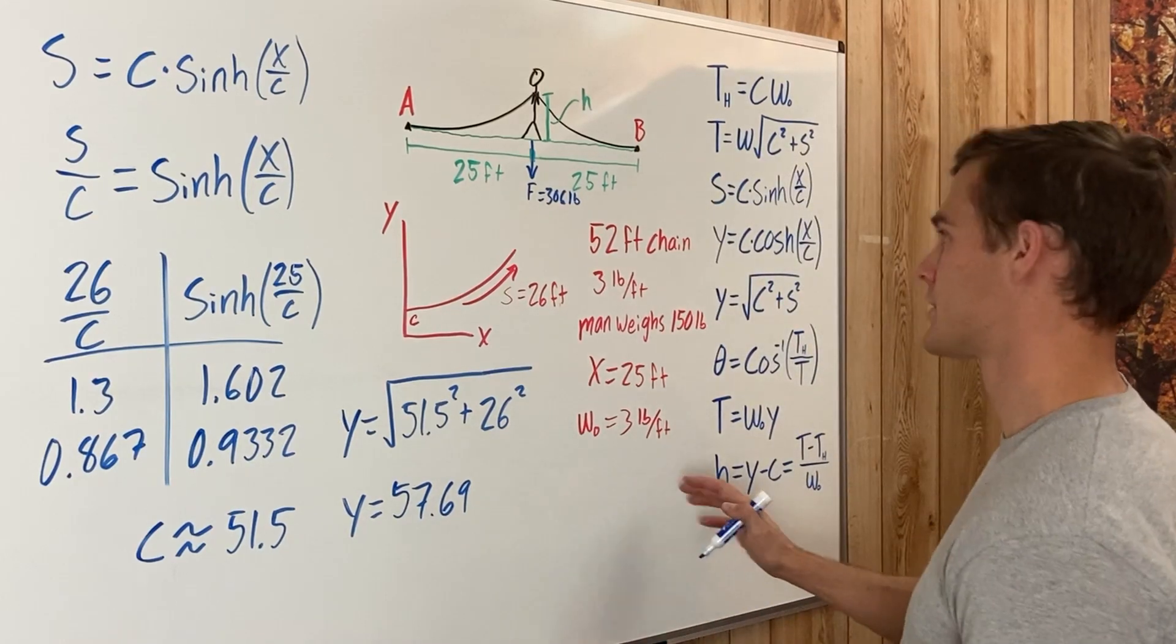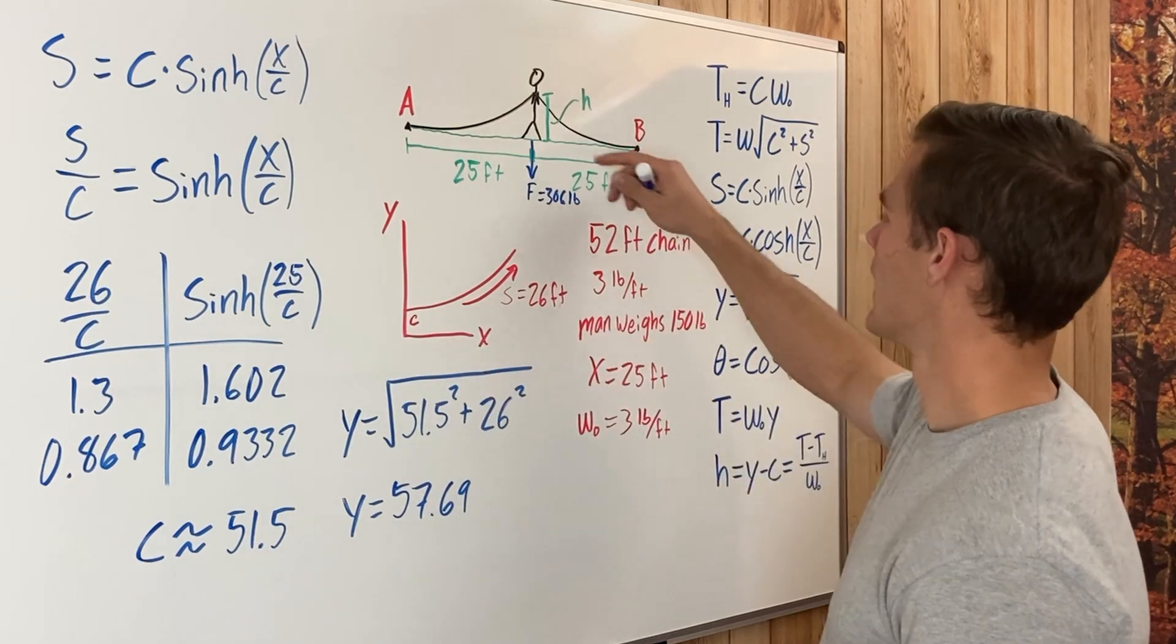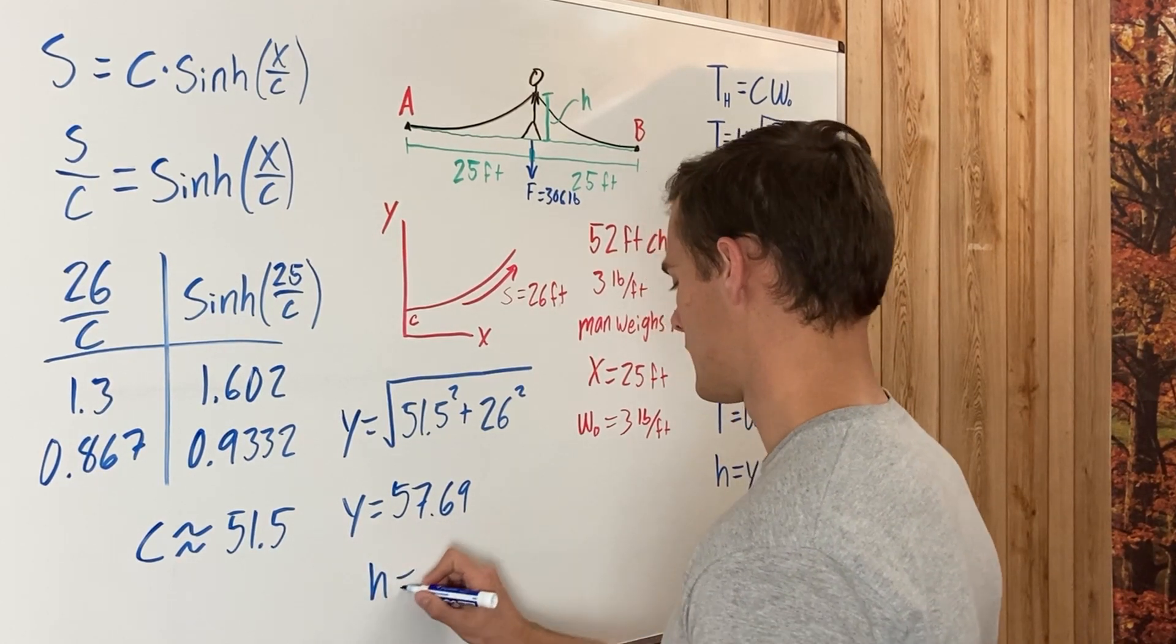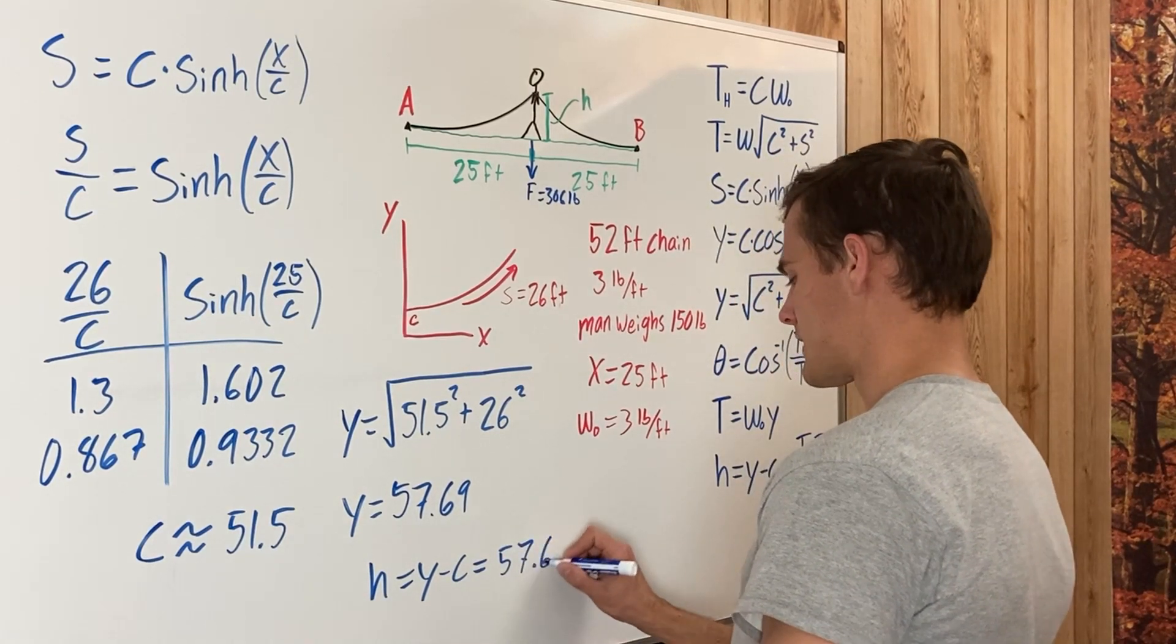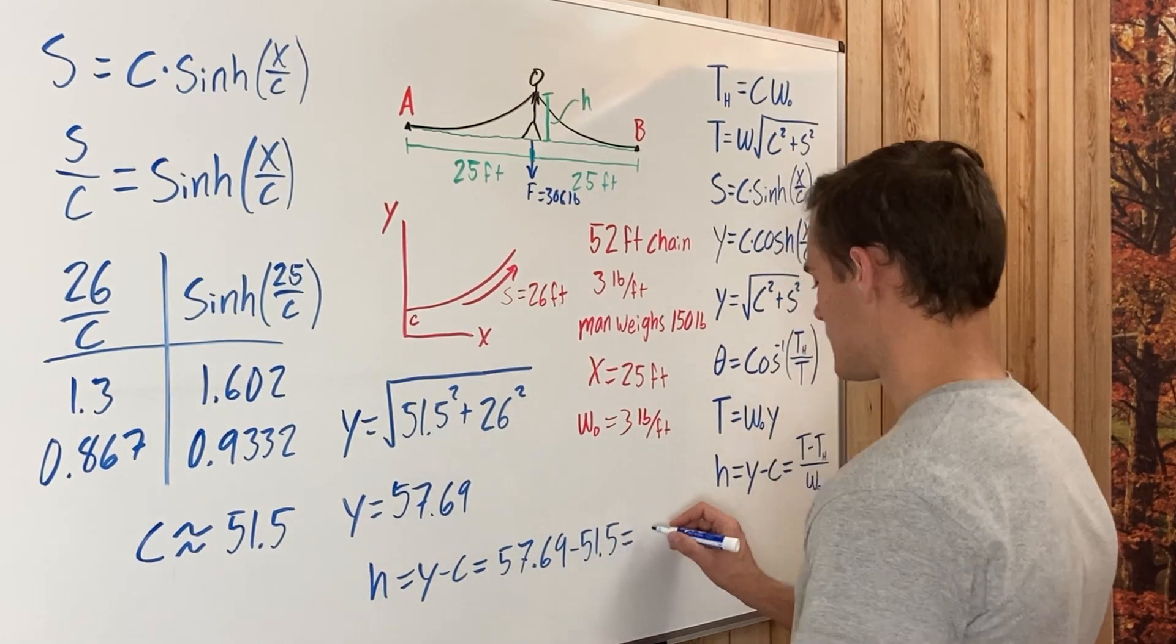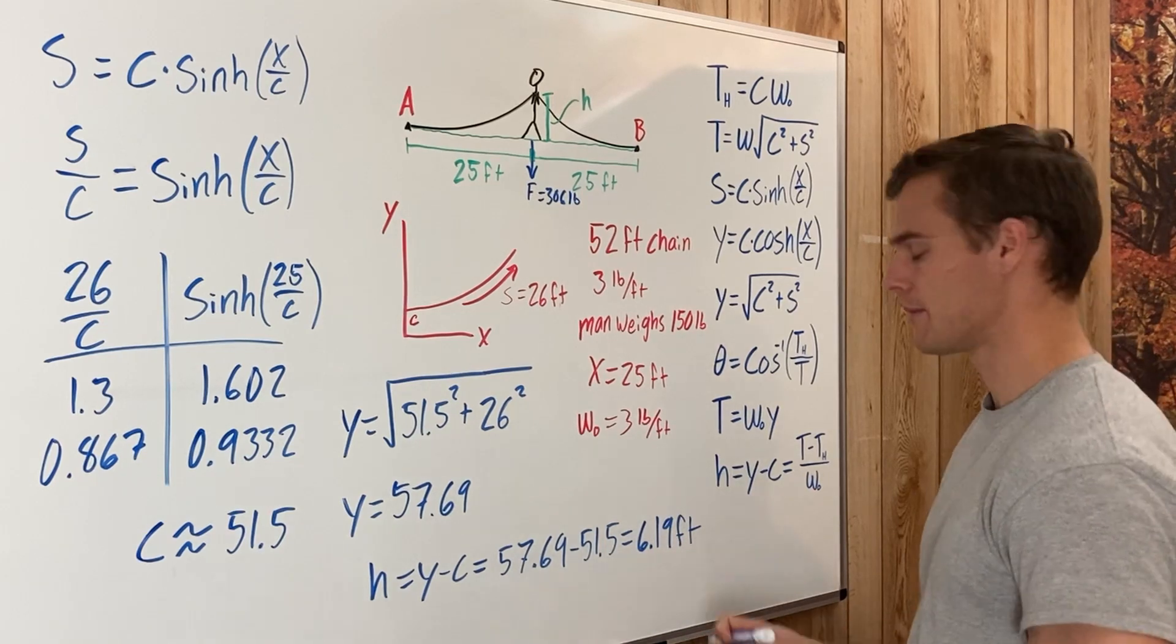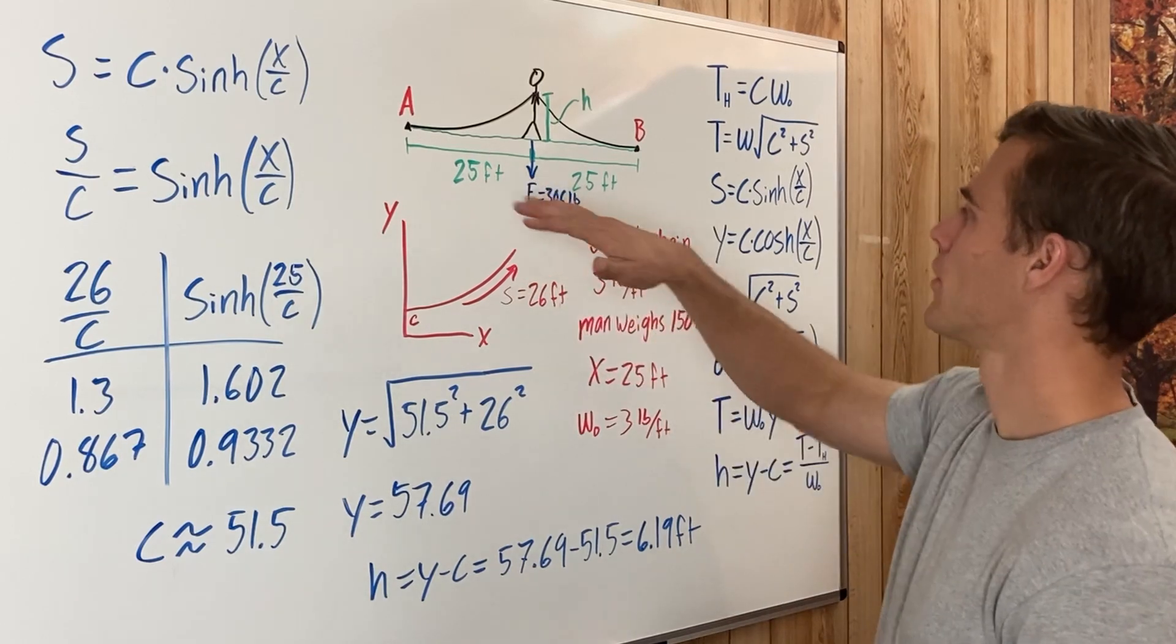And to find H, y is just the distance from the x-axis up to where this man is holding it, and so H is just y minus C. Plug that in: 57.69 minus 51.5 equals 6.19 feet. So this man has to hold it up 6.19 feet above the ground to get the whole chain off the ground.